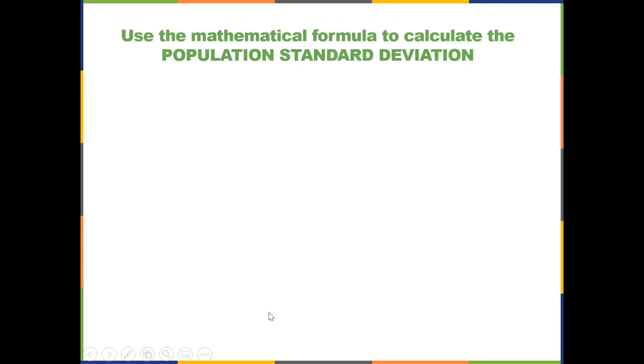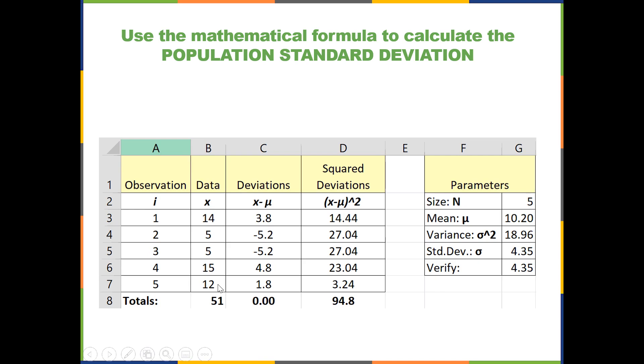Now let's look at the mathematical formula applied with Excel in a spreadsheet using the population standard deviation formula. Notice we have all our x values here. We calculate the mean of the population, subtracting that from each and every x value gives us these deviations. And notice how some are positive and some are negative, resulting in a total deviation of zero, which makes it problematic when we're trying to estimate an average deviation.